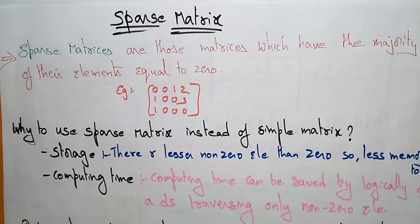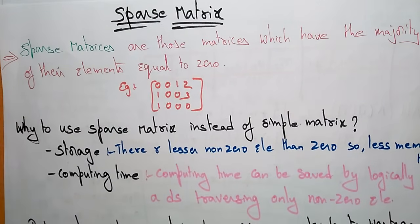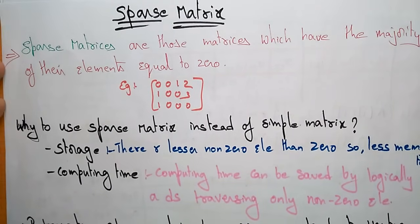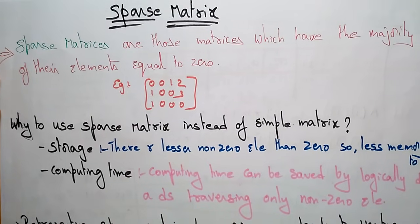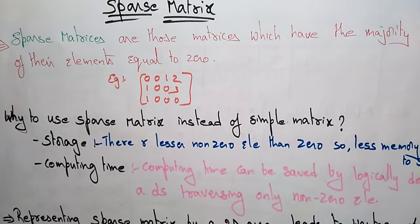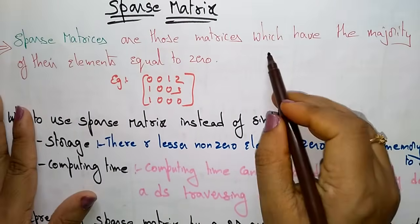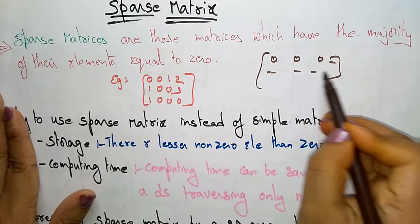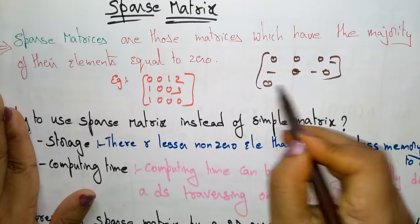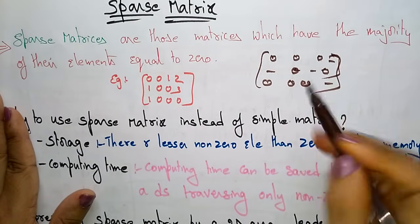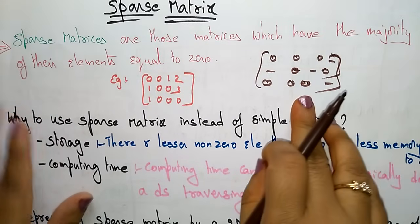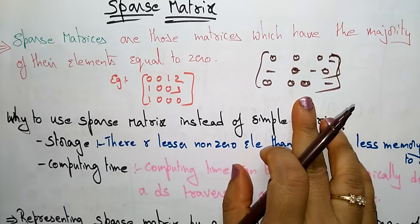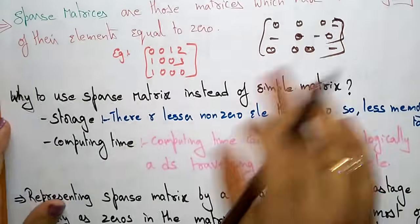Coming to the next topic, that is the sparse matrix, also called a sparse array. The sparse matrix is those matrices which have the majority of their elements equal to zero. Whatever matrix you have taken, in that you will see the majority should be zero. That is what you call a sparse matrix.